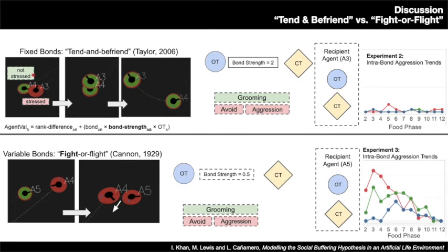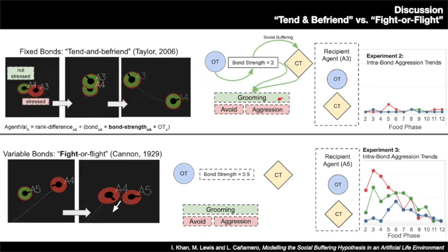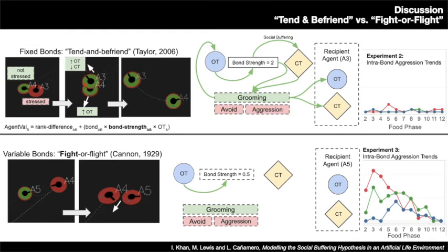To illustrate the underlying behaviours, consider two bonded agents: A4 who is not stressed and A3 who is stressed. When bond strength is fixed at its maximum value, oxytocin has a modulatory effect on bond strength, producing a strong social buffering effect and a high agent value. A4 decides to groom with its bond partner; as a result of that grooming, oxytocin increases and cortisol reduces in the bond partner, and the socio-positive behaviour further increases oxytocin, reinforcing the strong bond strength in a positive feedback loop.